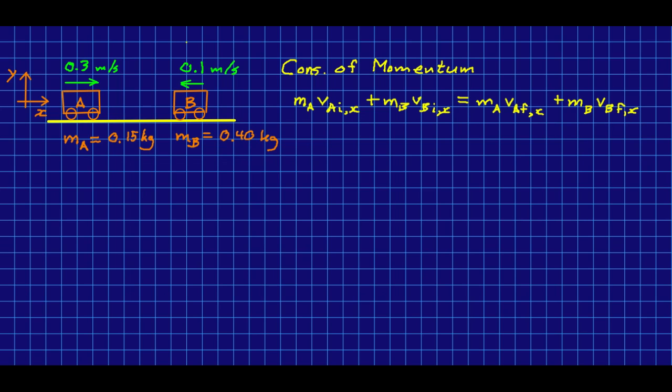So here's the conservation of the x components of momentum written out. But notice that here we know the masses, and we know both initial velocities, but we don't know either of the final velocities. Now if you look back at the sorts of things we were able to do in the previous unit, just with conservation of momentum, we always either knew one of the final velocities, or we knew that the carts stuck together so that they were moving with the same velocity, or some other piece of information like that. And so we always only had one unknown. But now we've got two unknowns.